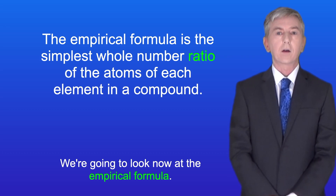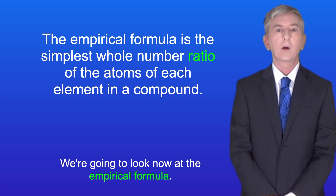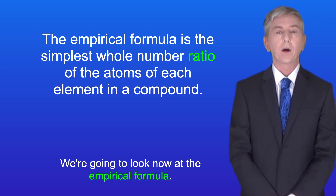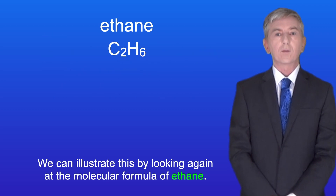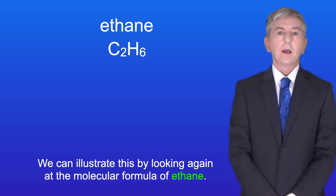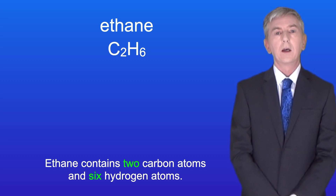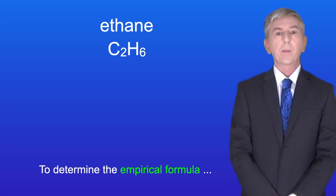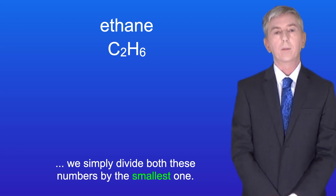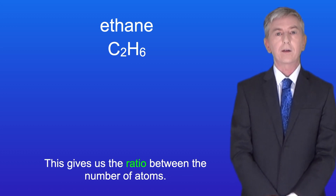Now we're going to look at empirical formula. The empirical formula is the simplest whole number ratio of the atoms of each element in a compound. We can illustrate this by looking again at the molecular formula of ethane. Ethane contains two carbon atoms and six hydrogen atoms. To determine the empirical formula, we simply divide both these numbers by the smallest one. This gives us the ratio between the number of atoms.